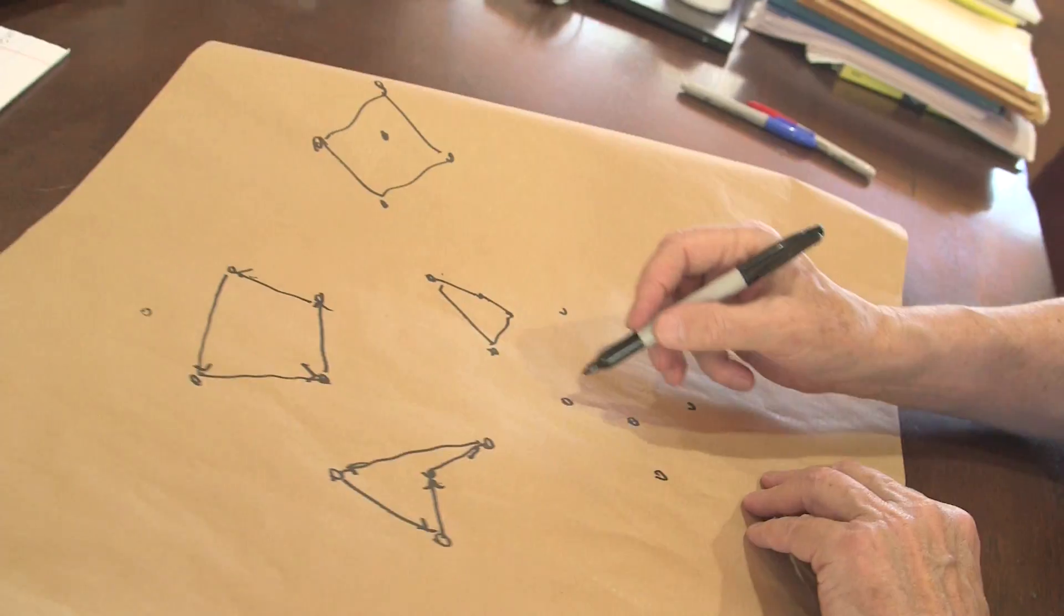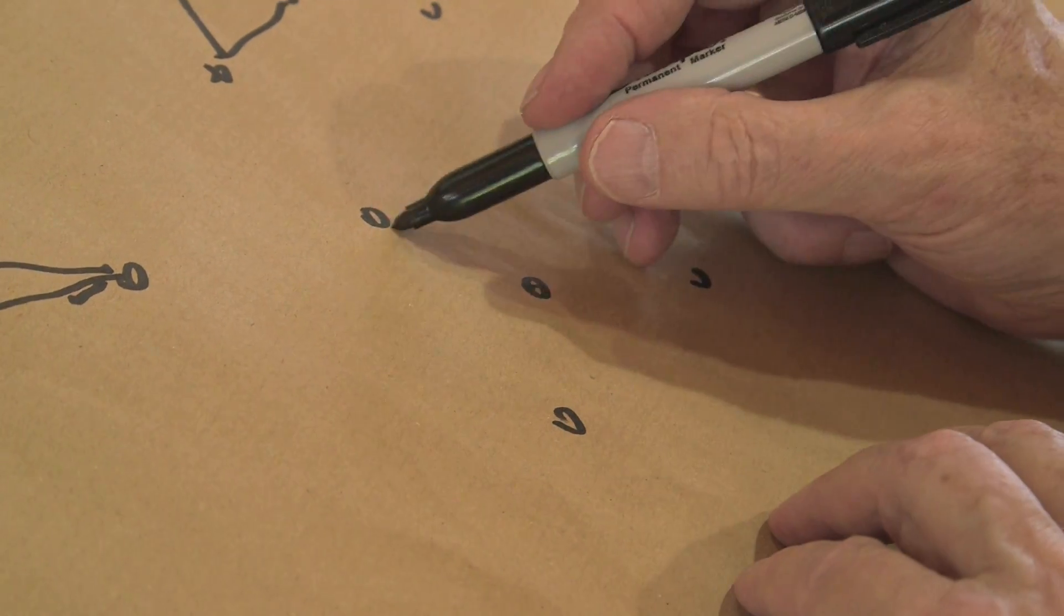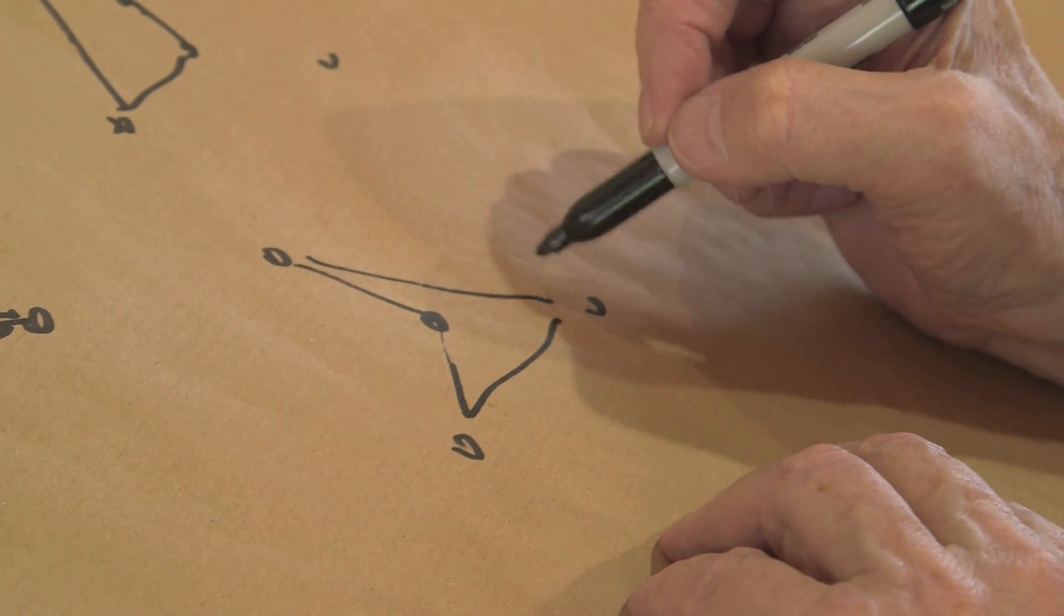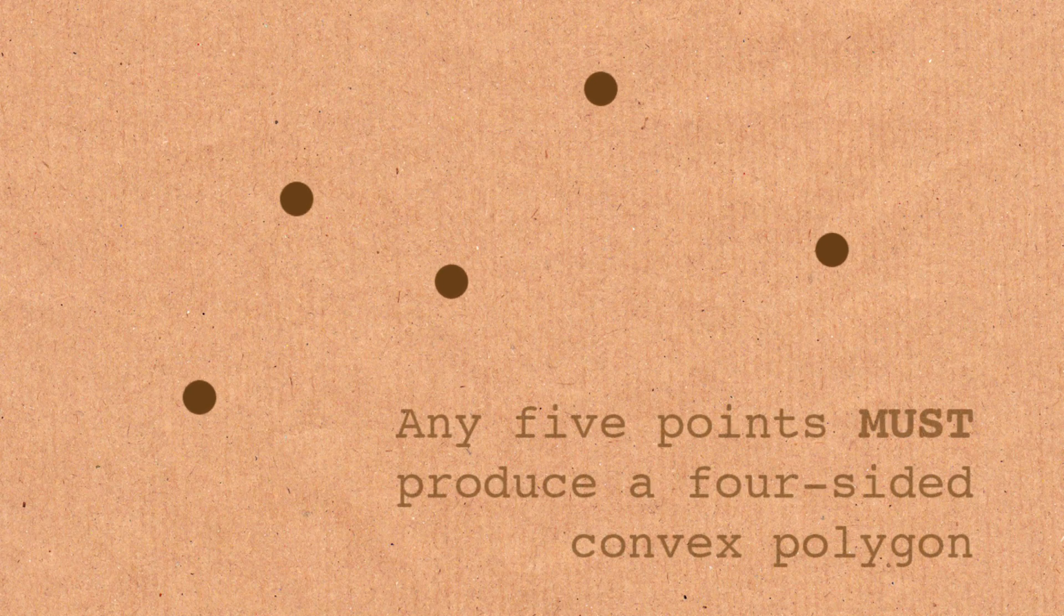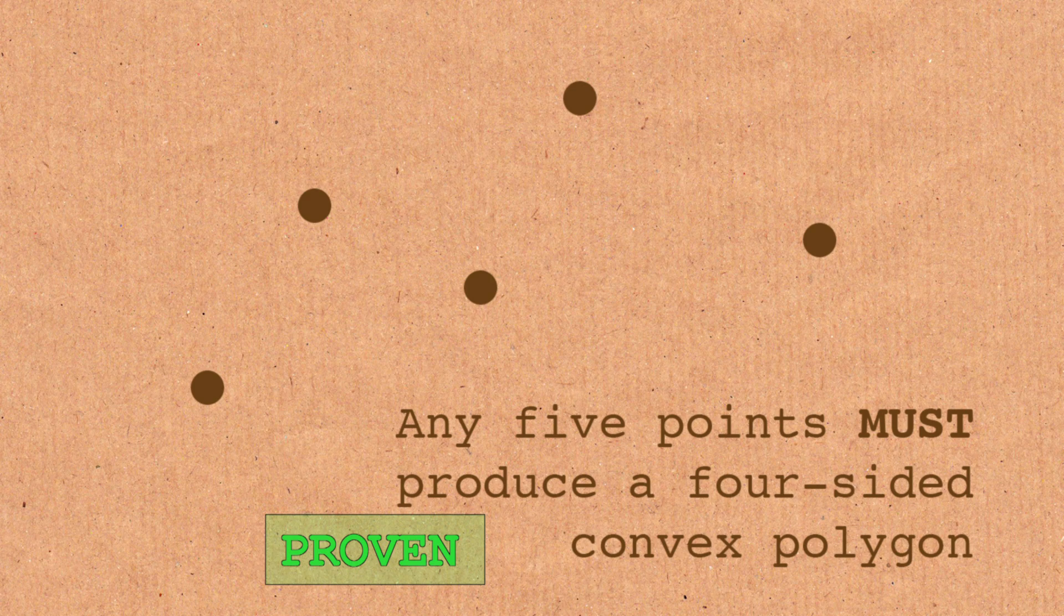So the question is, now if I just gave you four points, like this, then there is no convex four-gon here, because you've got to use all four points and so you'd be stuck. With five points, you have to get a convex four-gon. And there's a very beautiful, nice proof of that.